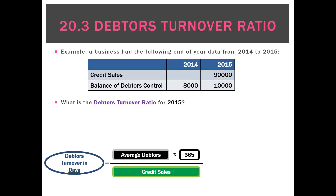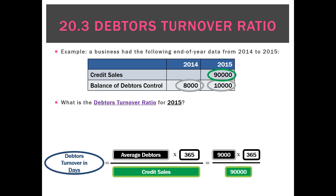Alternatively, we can express that in days: average debtors of $9,000 multiplied by 365, divided by credit sales of $90,000, which equals 37 days.